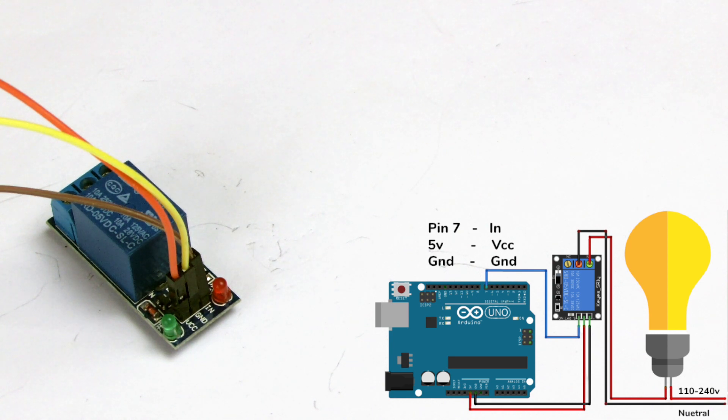And finally brown is the input signal wire, which is going to be connected to pin 7 on the Arduino Nano. So this is the pin that's going to go high and low to control the relay.